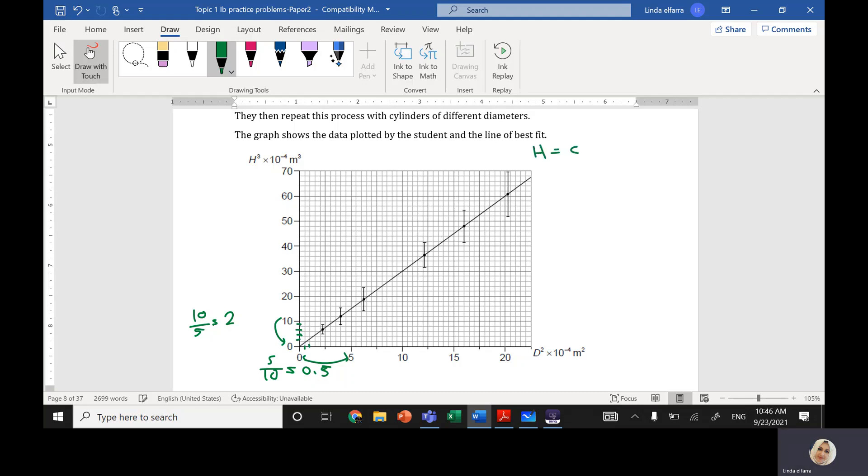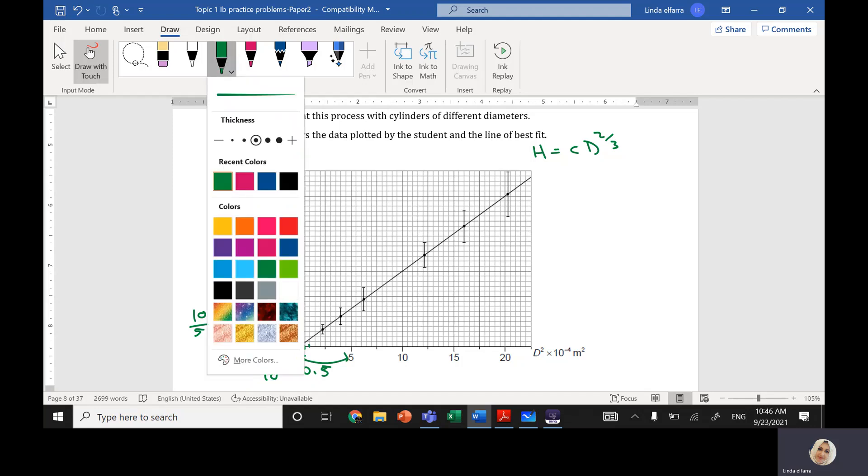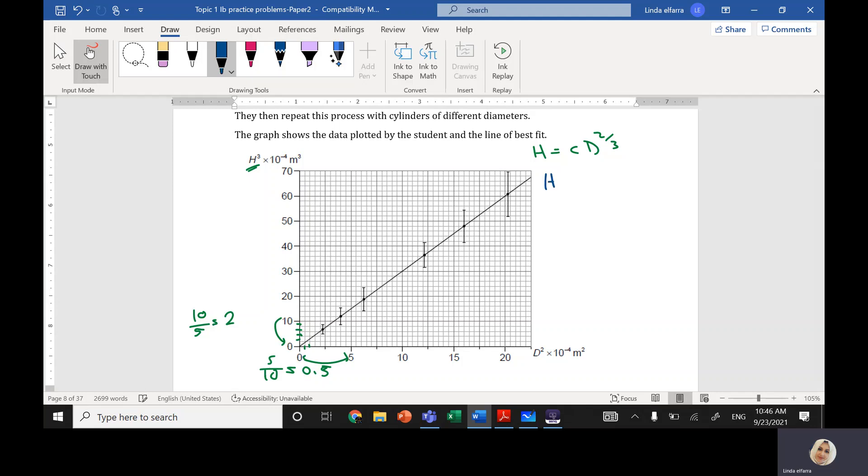I have a relationship between h cubed, so I can cube both sides. If I cube both sides I should get h cubed. I'm going to cube both sides of the equation. So h cubed will equal c cubed, the cube will cancel with the 3 down here, d to the power 2.